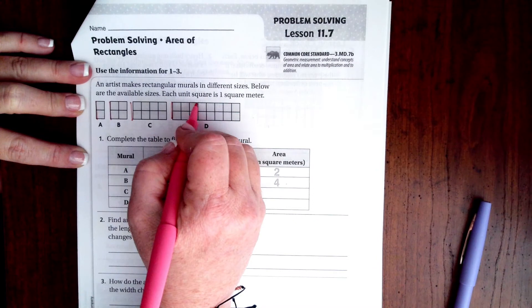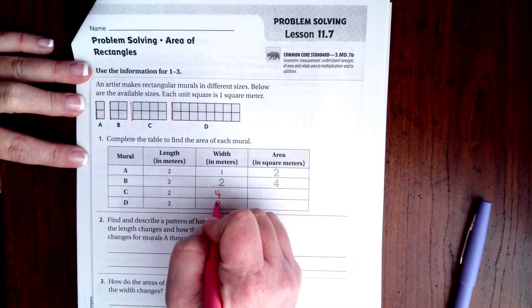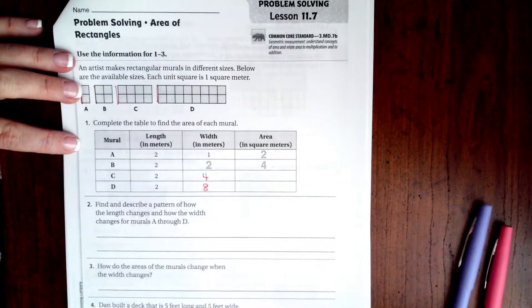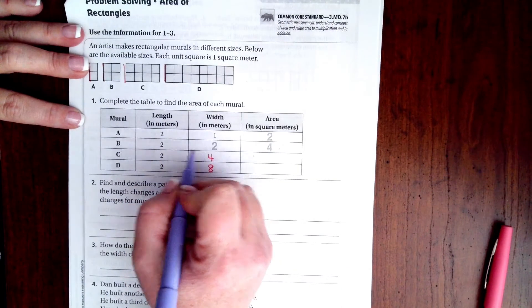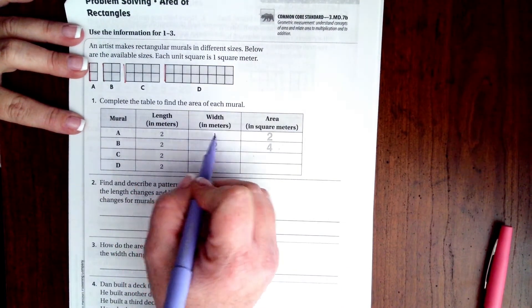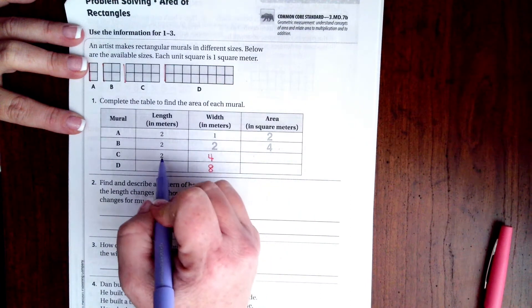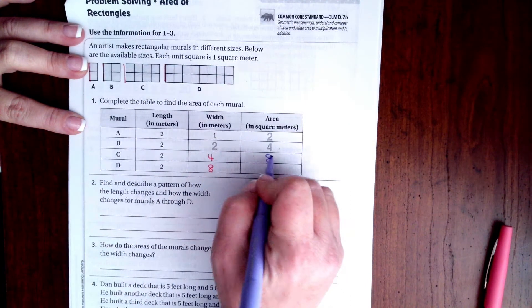So now to find the area you multiply these two numbers together. Two times one was two, two times two was four, two times four is eight, and two times eight is sixteen. So now our chart's filled out.